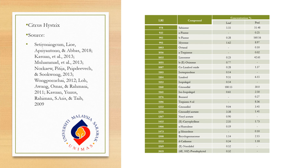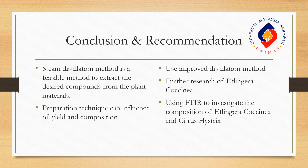In conclusion, steam distillation is a feasible method to extract desired compounds from plant materials, and preparation techniques can have significant influences on the oil yield and composition. As a recommendation, since steam distillation usually takes a long time and consumes a lot of energy, it is advised to use improved versions such as microwave-assisted steam distillation or hydro-distillation. Further research on Etlingera coquinea should also be conducted, and instead of using GCMS alone, FTIR can be used to investigate the composition of plant material.